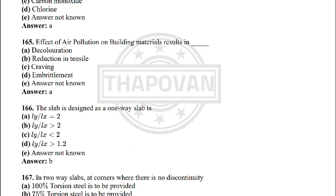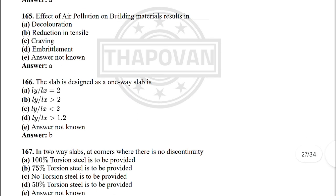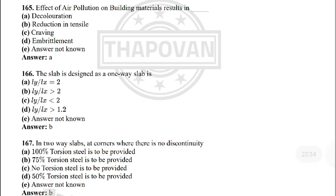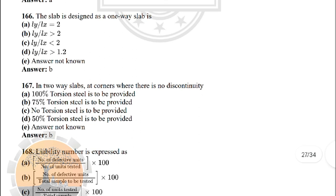Next: the effect of air pollution on building material results in — the correct answer is option A: discolouration. Next: the slab is designed as one-way slab when — the correct answer is option B: Ly/Lx > 2. Next: in a two-way slab, at a corner where there is no discontinuity — the correct answer is option B: 75% torsional steel is to be provided.